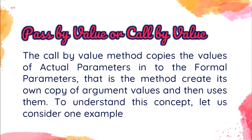Pass by value, or call by value: the call by value method copies the value of actual parameters into the formal parameters. That is, the method creates its own copy of arguments. When you pass a parameter to a method by value, the value of the actual parameter is copied to the formal parameter. Hence, any changes in the formal parameter value do not reflect in the actual parameter.